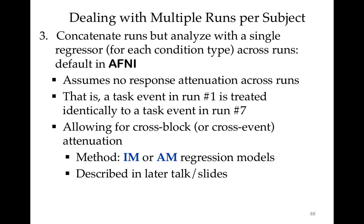The third way is to concatenate the runs and analyze with a single regressor across runs — one regressor for each condition type, so visual gets one and auditory gets one. This is the default in AFNI. This implicitly assumes there's no response attenuation across runs, because we're calculating the same beta — one beta for the visual task. So a task event in run one is treated identically to a task event in run seven. If you wish to allow for cross-block or cross-event attenuation, there are methods in AFNI called IM (individual modulation) and AM (amplitude modulation) regression, described in a later talk.